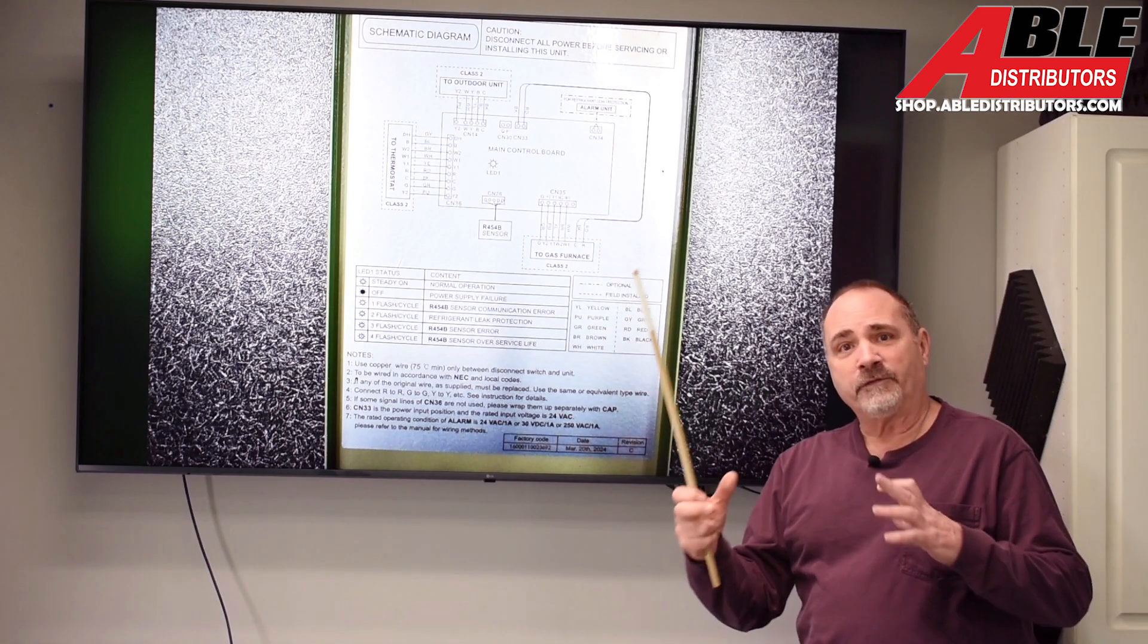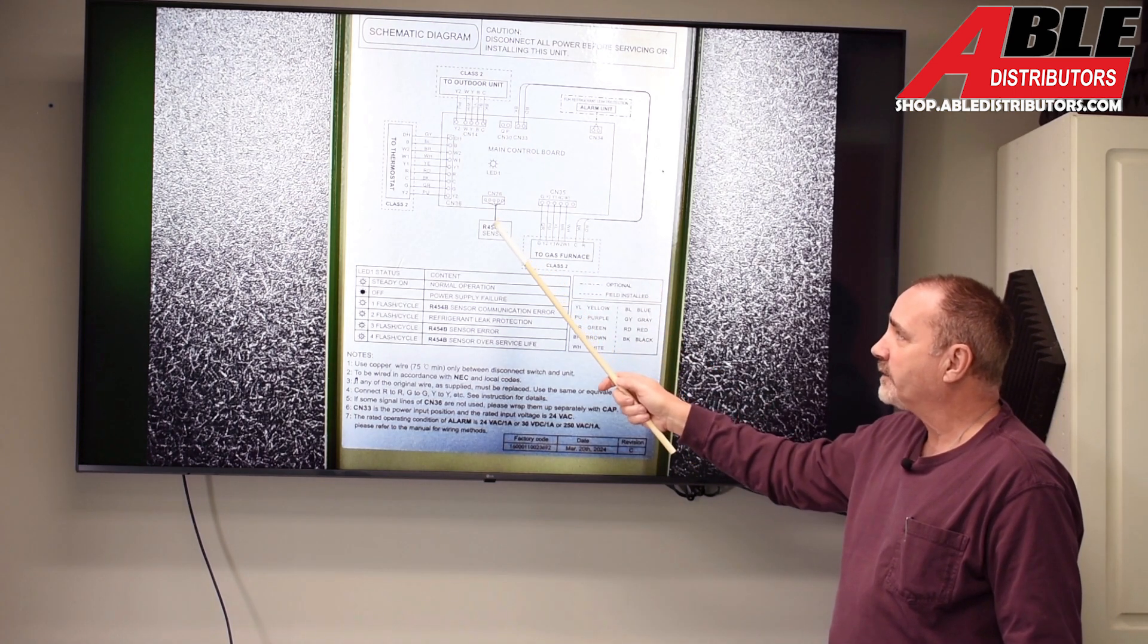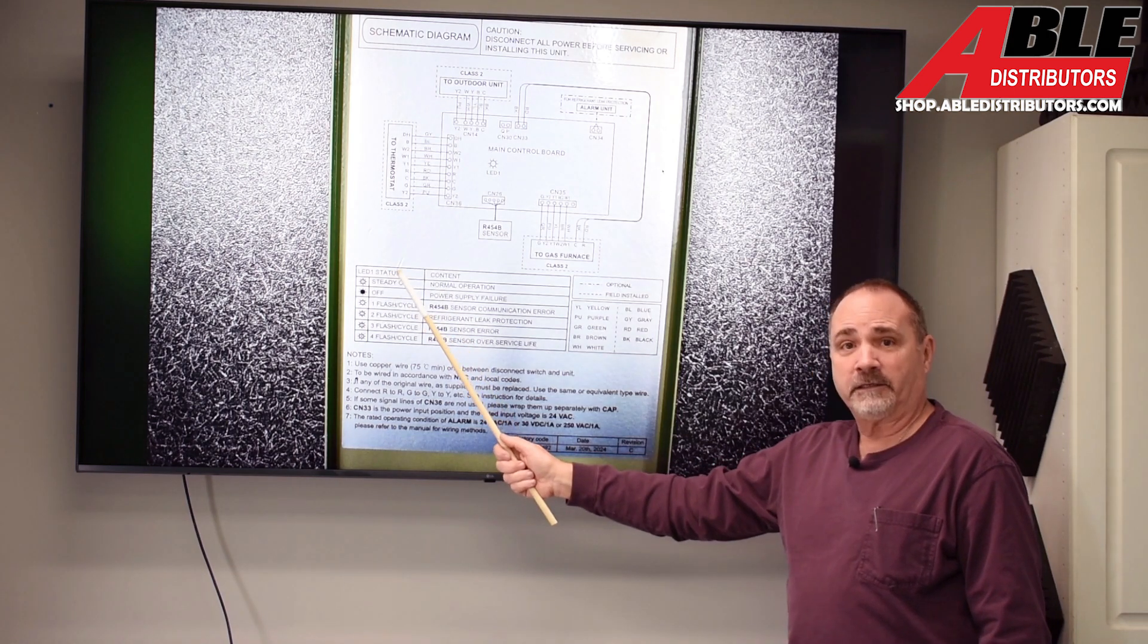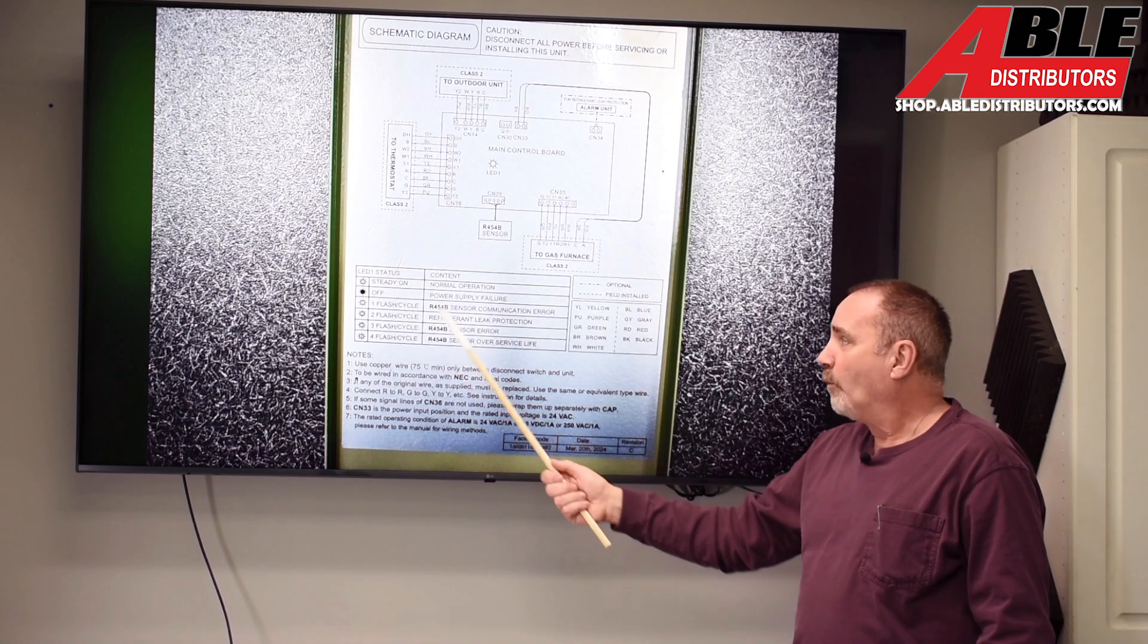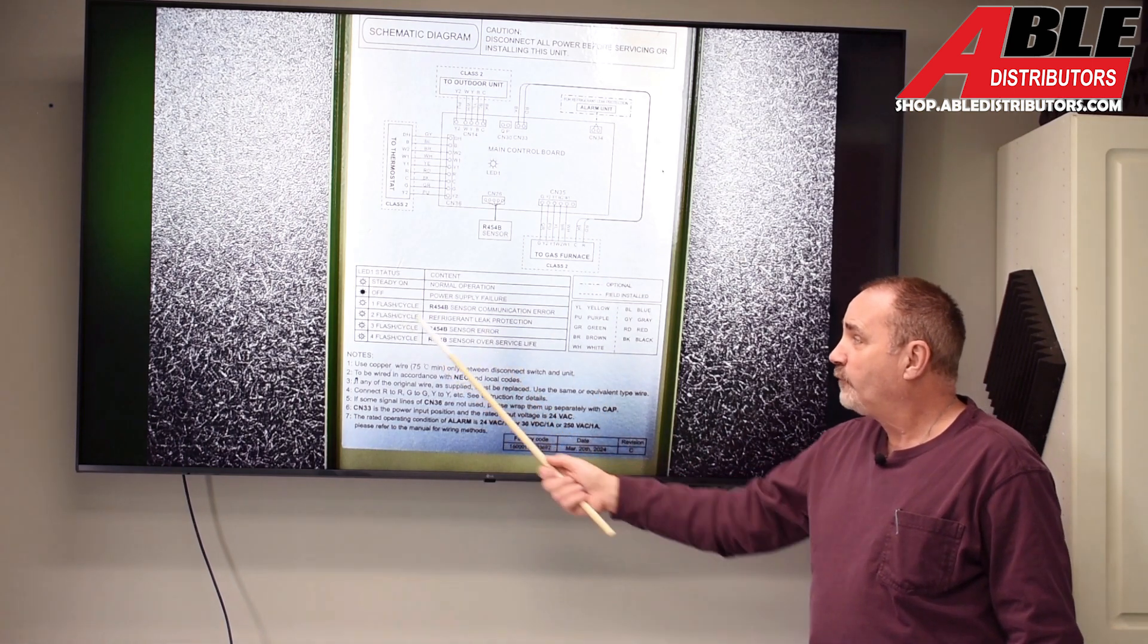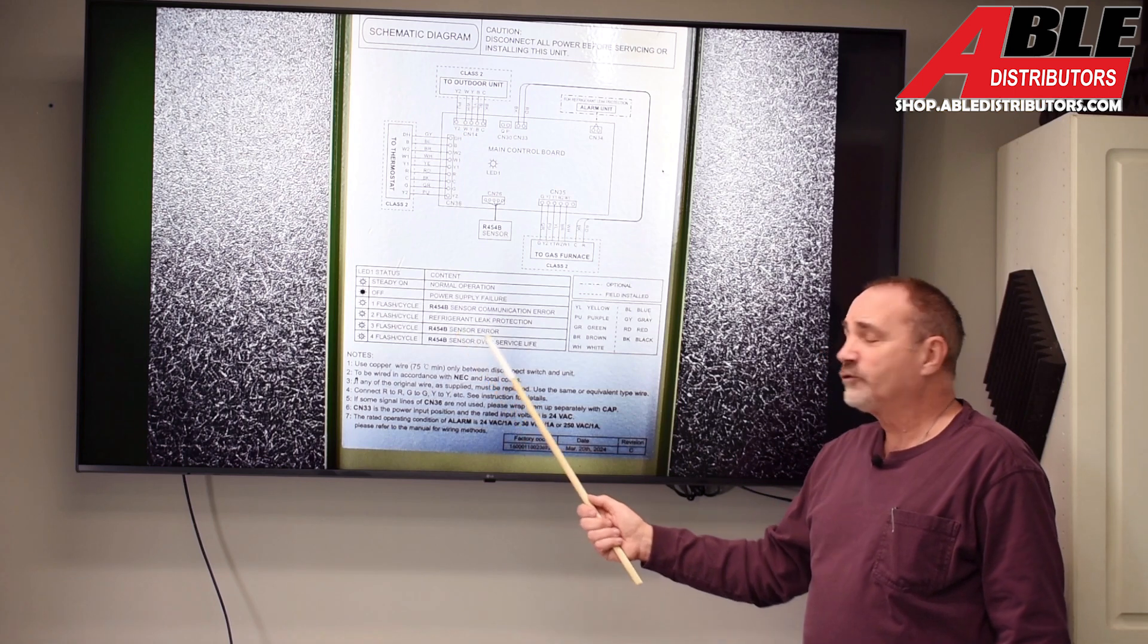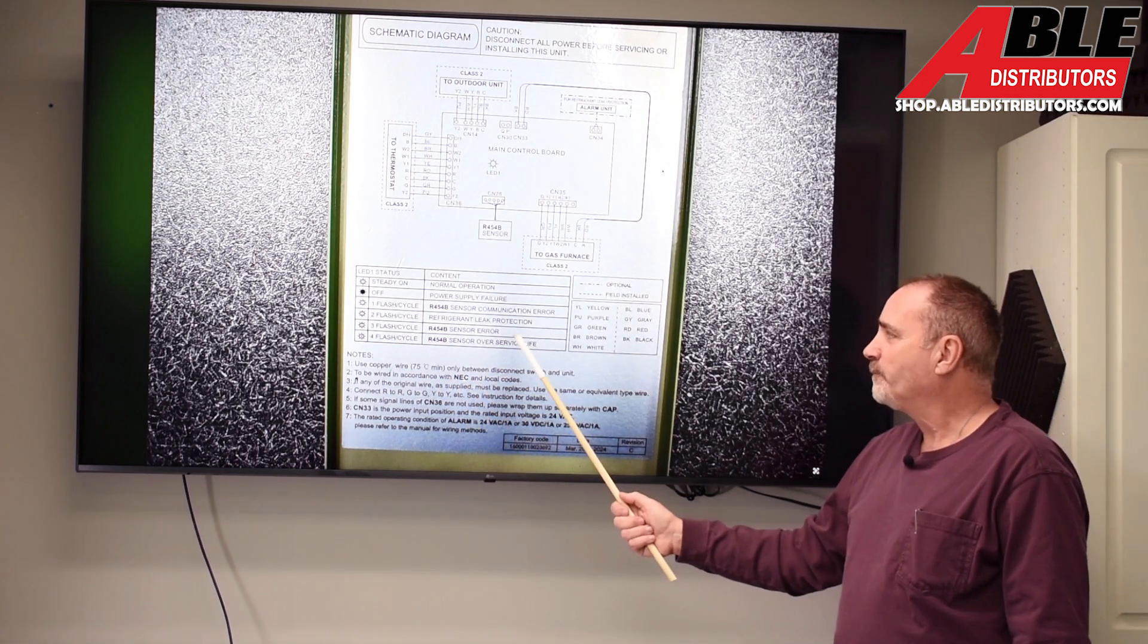Inside the lid of the interface box, you've got the wiring diagram. A lot of this you don't really need. You know where the sensor plugs in, you know what goes to the thermostat, the outdoor unit, an alarm if you want it, and to the gas furnace. But really, on the inside of here, what you're going to pay attention to is the LED status. Steady on, it's working perfectly fine. Off, there's a power problem. One flash, sensor communication error. It could be a plug, it could be the sensor itself. Two flash, refrigerant leak detected. So that's the one we're probably going to get if there's a leak inside there. A three flash, a sensor error. Again, it could be a bad sensor. It could just be a bad connection or a plug. Check those first. Four flash sensor over service life.